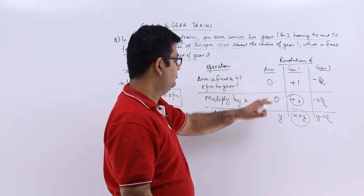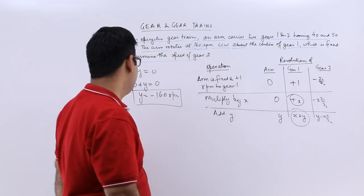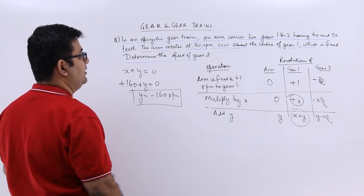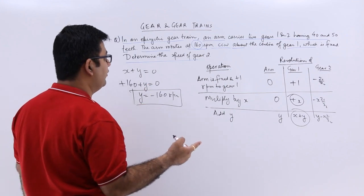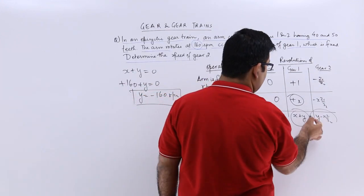So arm is going by 160. Then what is the speed of gear 2? The speed of gear 2 is this.